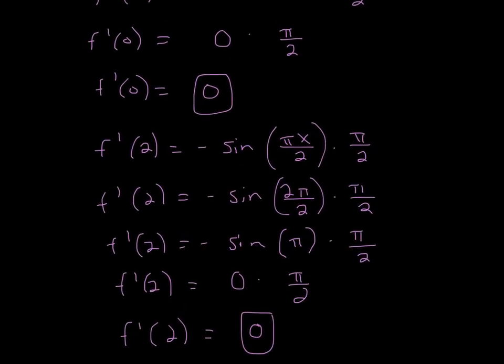And the other part of the question just asked us to find when the derivative was 2, so we just plug it in when it's 2. So we have the same function, and all I'm doing is plugging in 2 for that x right there. So it'll be 2 pi over 2. So the 2s cancel out to give us negative sine pi times pi over 2.